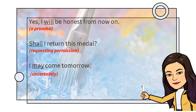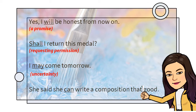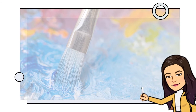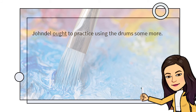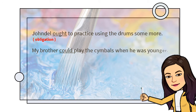She said she can write a composition that good. The modal 'can' is used in expressing ability. John Dell ought to practice using the drums some more. The modal 'ought' is used to express obligation. My brother could play the cymbals when he was young. The modal 'could' is used to express ability in the past.